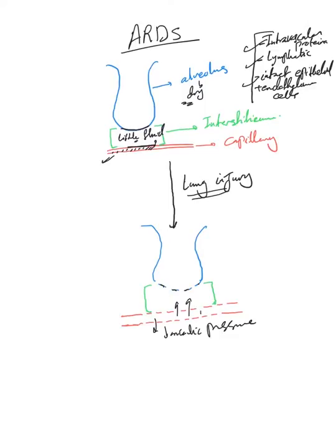And then into the alveoli, because the lymphatics cannot really handle the large amount of fluids. So what we end up with is fluids, large amounts of fluids in the interstitium and inside the alveolus.